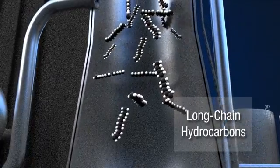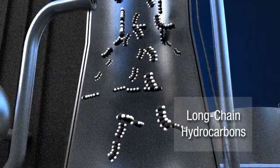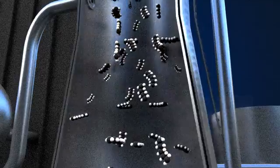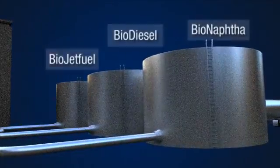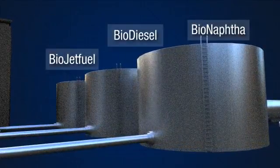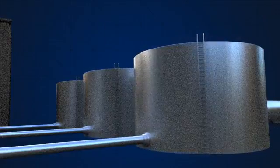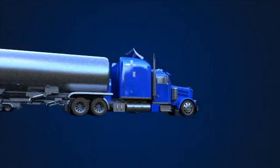The Fischer-Tropsch crude or long-chain hydrocarbons are upgraded and refined into liquid fuels such as biojet fuel, biodiesel, and bio naphtha. Customers will periodically collect the fuels from the facility to use in their operations.